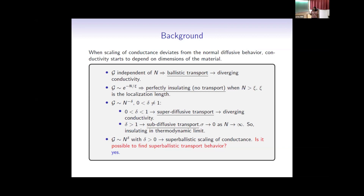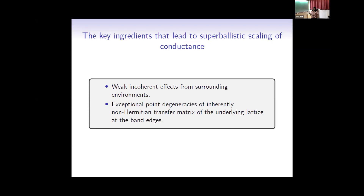The question of this work is: can the conductance grow as N to the power delta, where delta is greater than 0? That means transport faster than ballistic — super-ballistic scaling of conductance. We have shown that it is possible to find such examples, but only up to some finite size; in the thermodynamic limit, it is not possible. The two key ingredients are weak incoherent effects from surrounding environments and the non-diagonalizability — the inherently non-Hermitian transfer matrix of the underlying lattice.